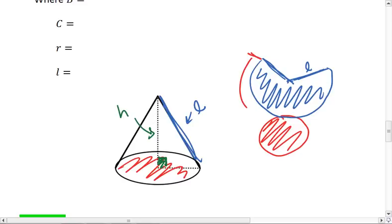The slant height here is the length of this radius of the circle sector. Furthermore, the arc of our circle sector is the circumference of the red circle. So it's the same as 2πr, where r is the radius of our base.